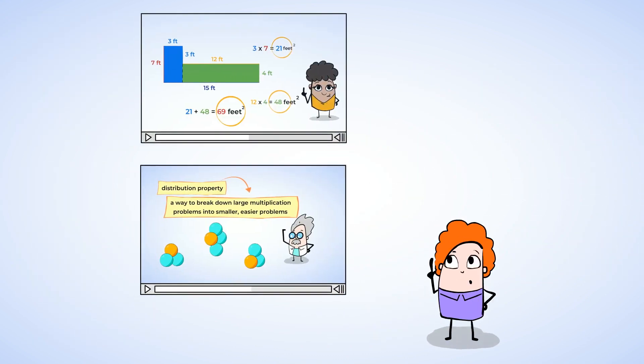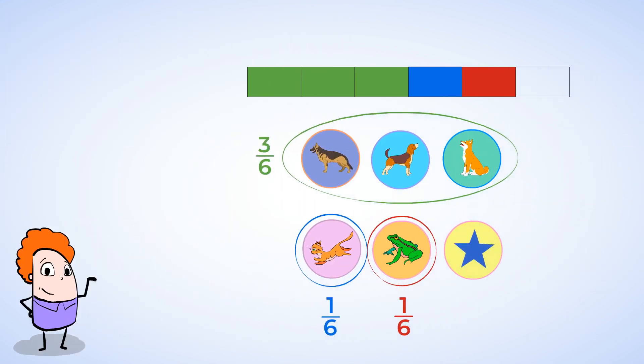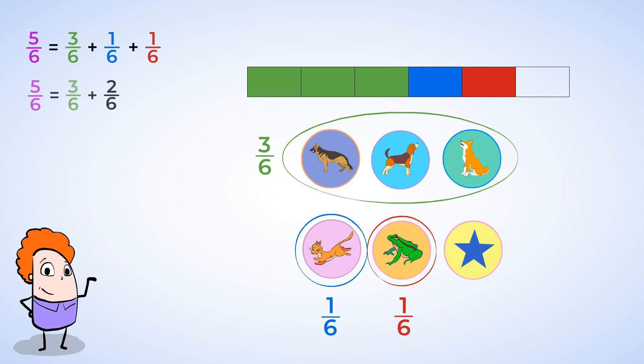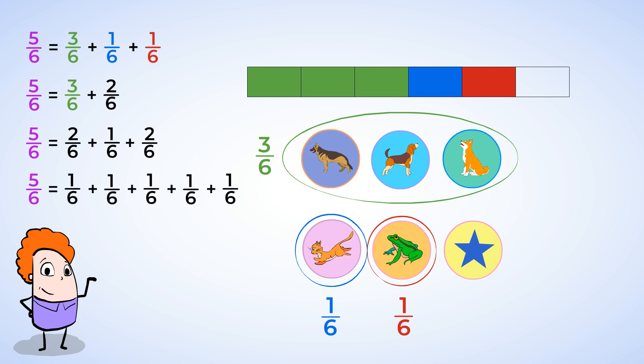We have broken down or decomposed the fraction into smaller parts. Now, you learned about decomposition with area and breaking down shapes into rectangles. And you also decompose numbers when you use the distributive property and area models to multiply larger numbers. But now we're going to do the same thing with fractions. The example I gave before was just one way of how we could have broken down five-sixths — look at all these other ways. And there's even more than what you can see.